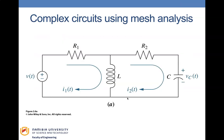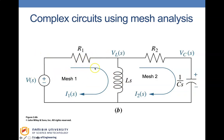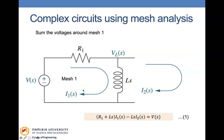This complex system has two loops. After transforming to the Laplace domain, the impedances are R1, R2, Ls, and 1/Cs, with mesh currents I1(s) and I2(s) indicated. Writing KVL for mesh 1: the total voltage drop is (R1 + Ls)·I1(s) minus Ls·I2(s), because Ls is shared with the adjacent mesh. This equals the applied voltage V(s).